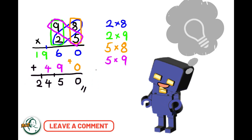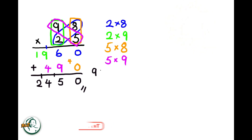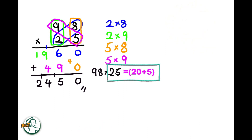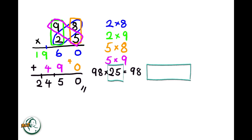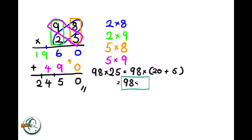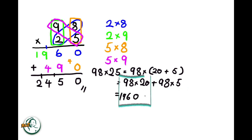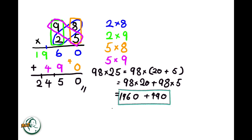Let's delve into the rationale behind this method. Consider 25 as 20 plus 5. Now, we can express 98 times 25 as 98 times (20 plus 5). This expands into 98 times 20 plus 98 times 5. Calculating, we get 1960 for 98 times 20, and 490 for 98 times 5. Adding these results together, 1960 plus 490 equals 2,450.